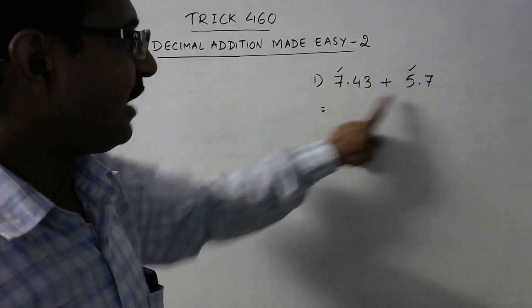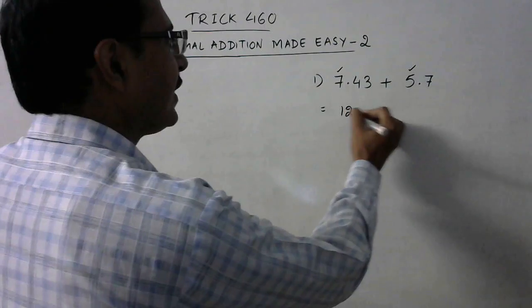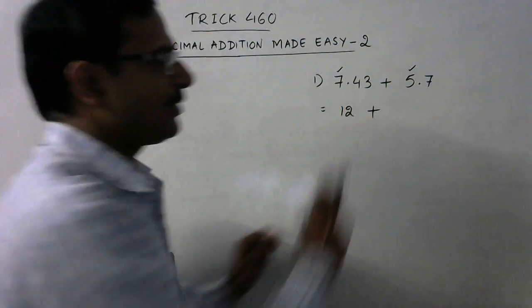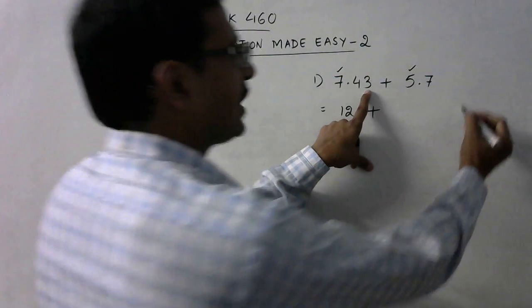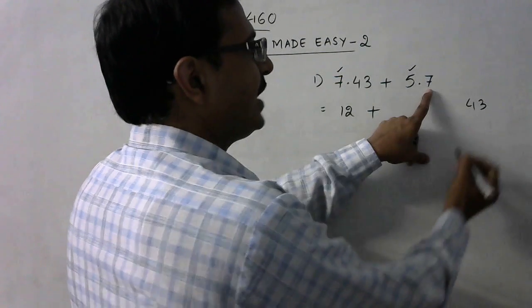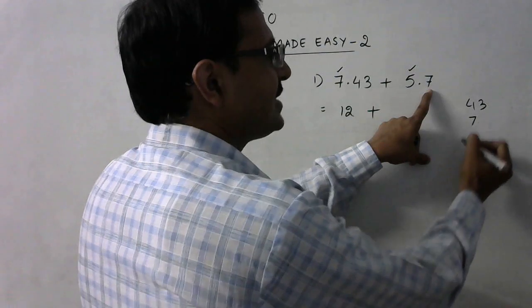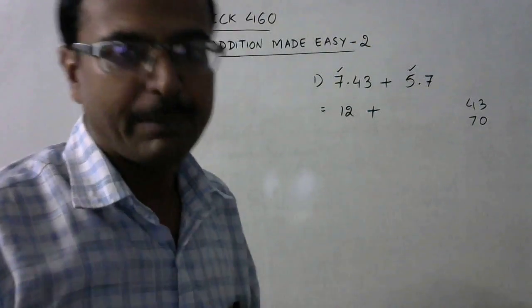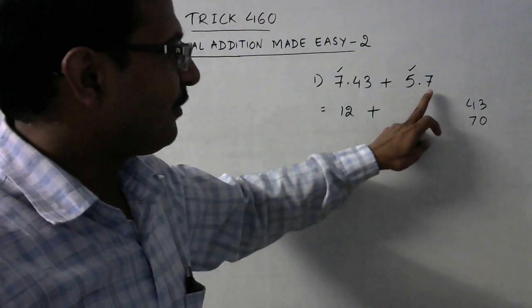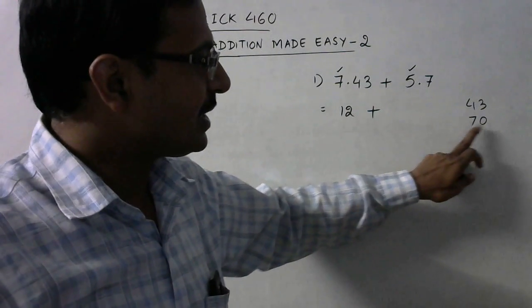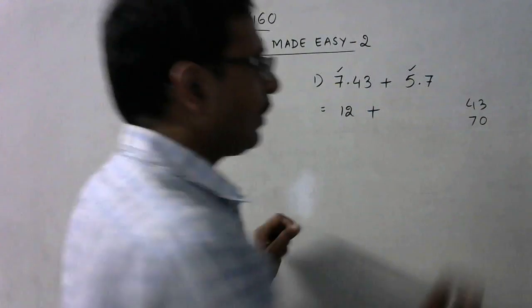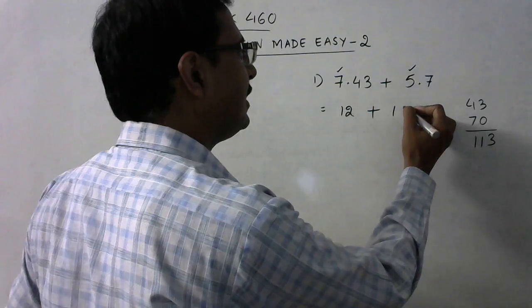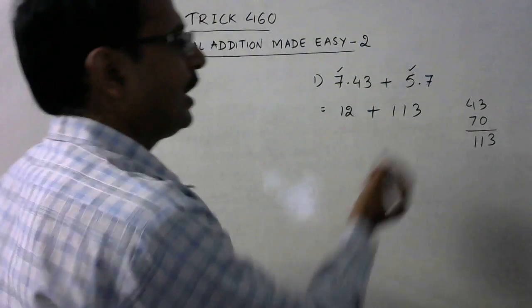So 7 and 5, that gives us 12. And now, which are the greater number of digits after the decimal place? We have two digits here, so write 43, and one digit here, so write 7 and follow it by the number of zeros which will equate the number of digits here. So if it is only 7, then we have to write it as 70. Now add this, you get 113.